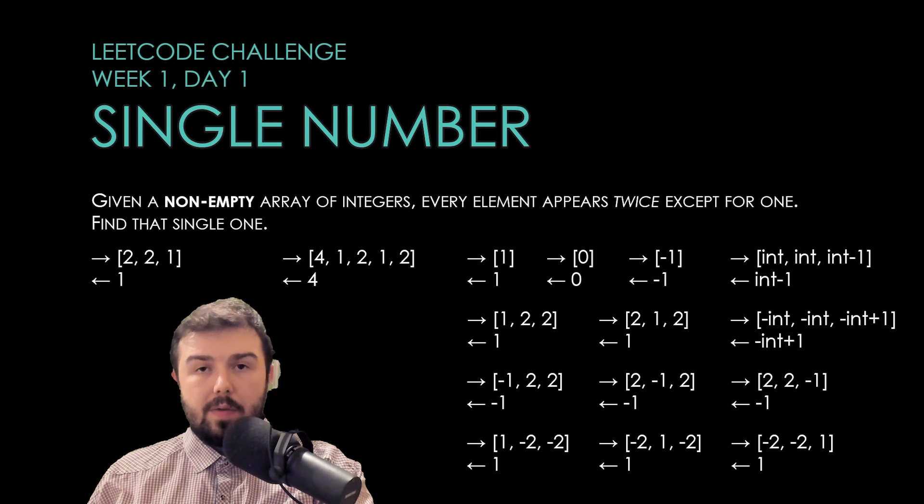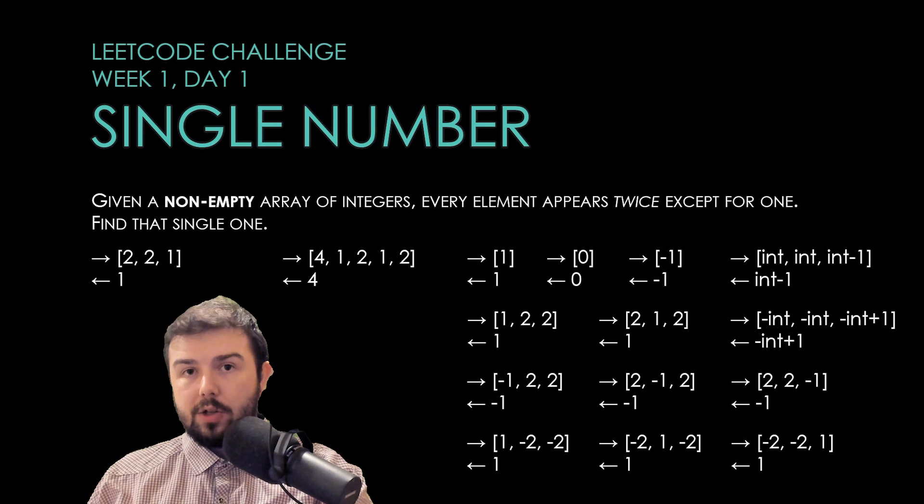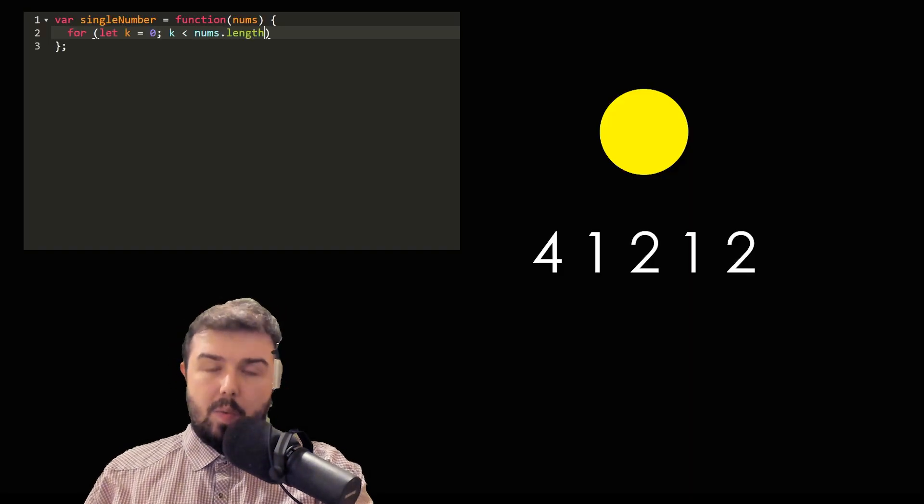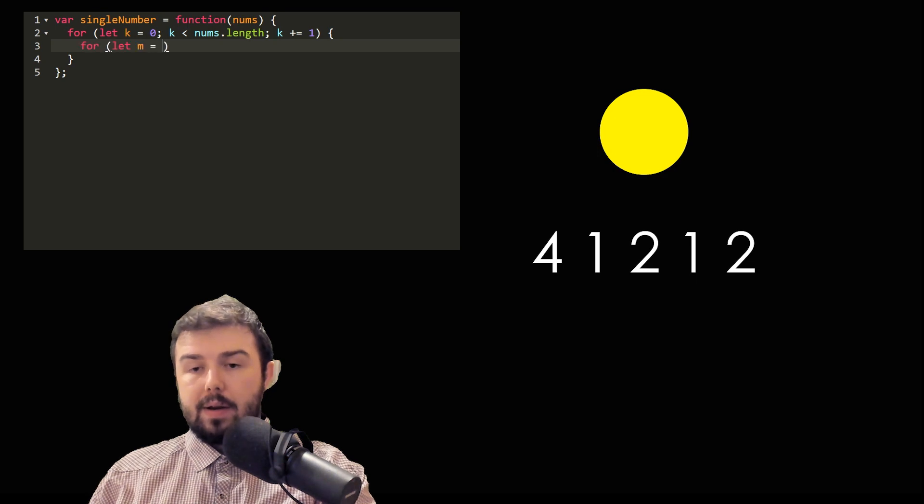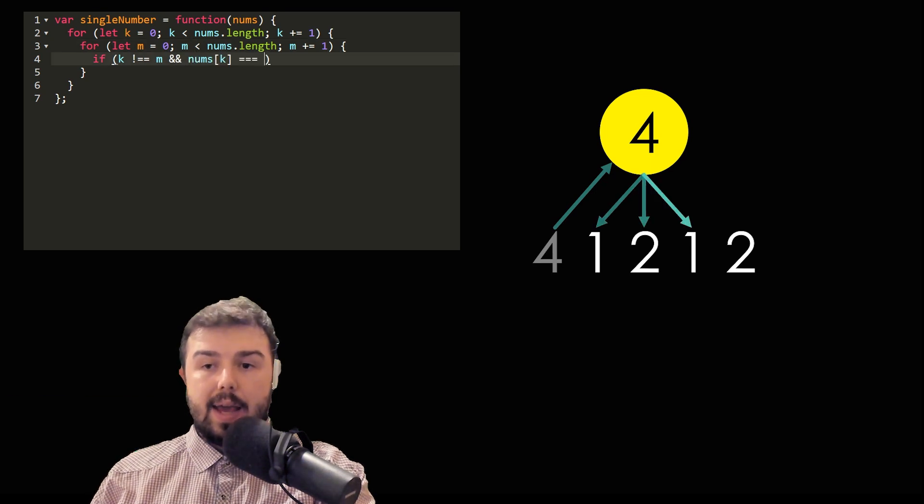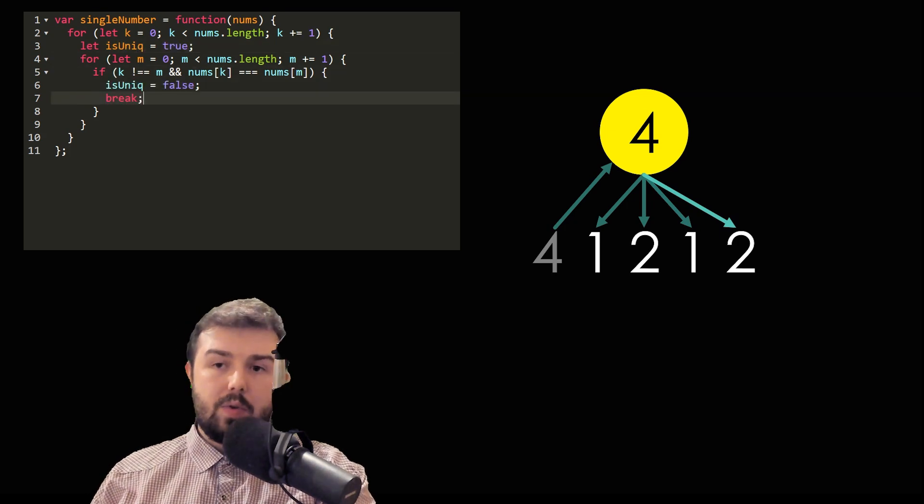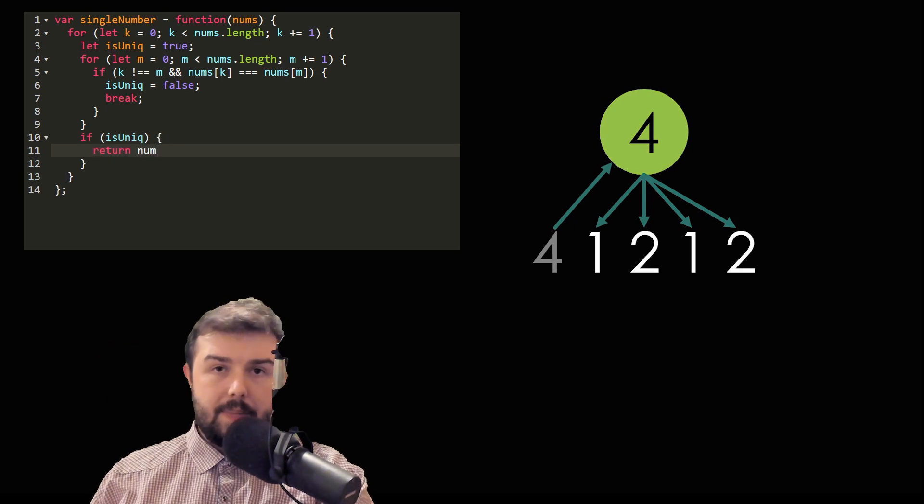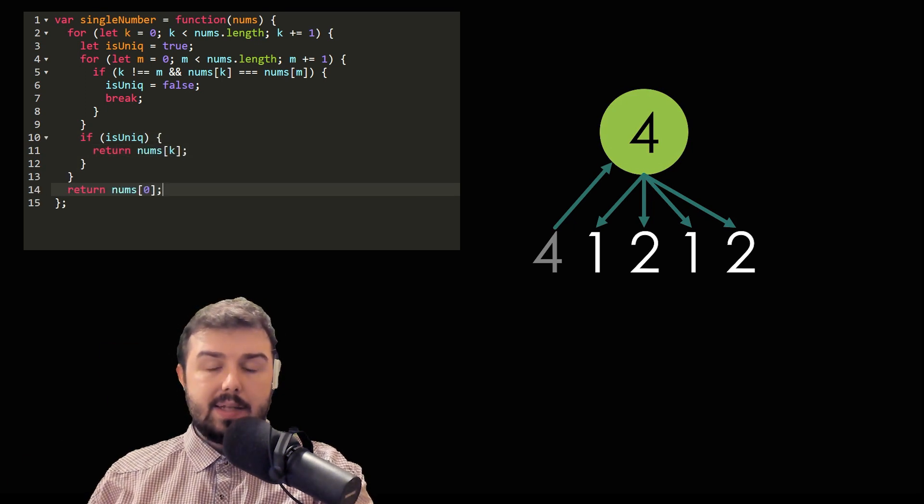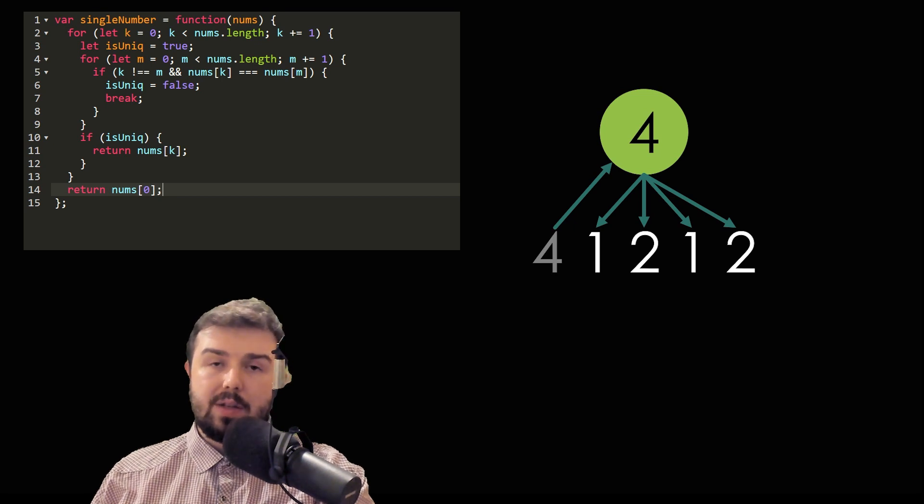First we will solve the problem with a pretty straightforward algorithm using JavaScript. We will go through every number starting with the first one, 4, and check it against every other number. There is no other number equal to 4, so 4 is the answer. But if 4 were the last number, we would have a lot of checks—exactly O(n²) checks, which is not optimal. But still, this is a solution.